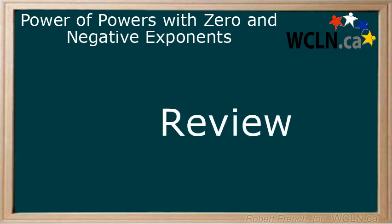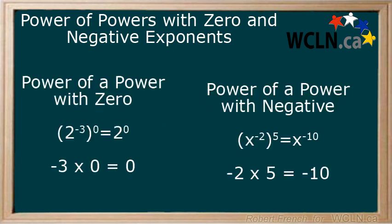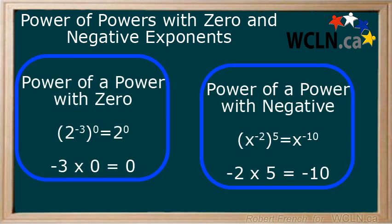In this lesson you learned that powers of powers involving zero and/or negative exponents are still multiplied together using the rules of multiplication around zero and negative exponents.